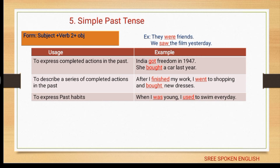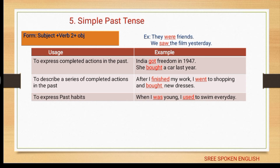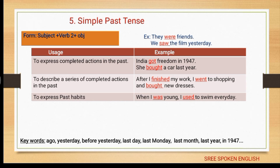Simple past tense is used to express completed actions in the past: 'India got freedom in 1947', 'she bought a car last year'. It describes a series of completed actions: 'after I finished my work, I went shopping and I bought new dresses'. It also expresses past habits: 'when I was young, I used to swim every day.' Keywords: ago, yesterday, before, the day before yesterday, last day, last Monday, last month, last year, in 1947.